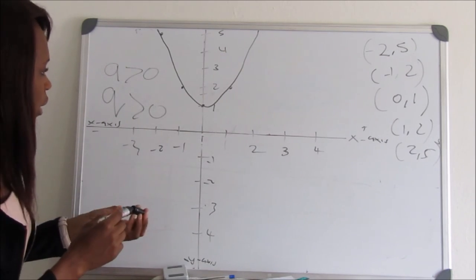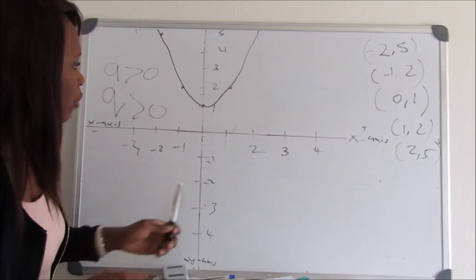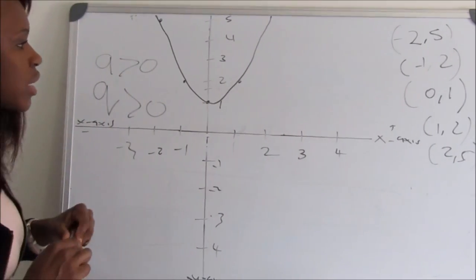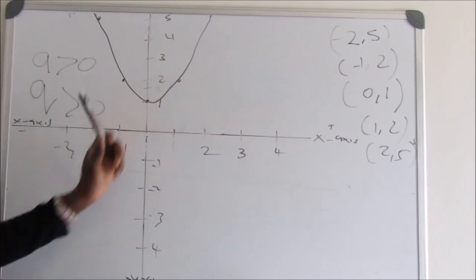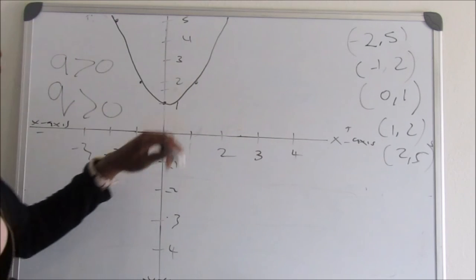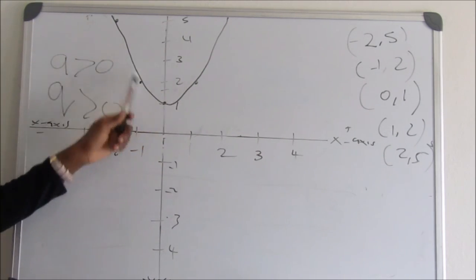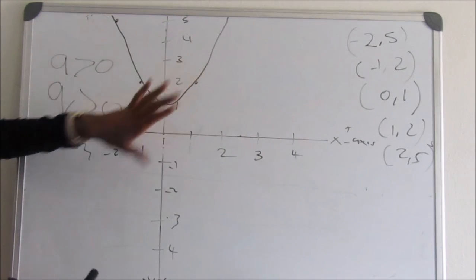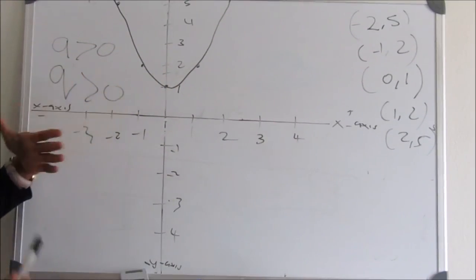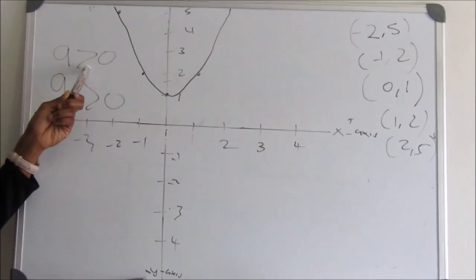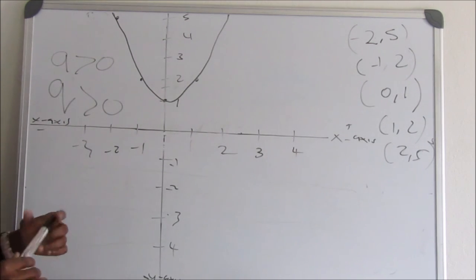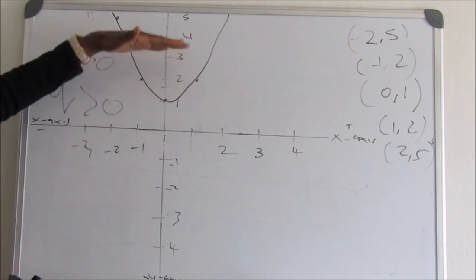I hope you understood this. Remember when you draw your graph, you must always name your axes and show which side is positive and which side is negative. This rough sketch confirms that a is greater than zero because our graph has a smiley face, and q is greater than zero because the graph has been shifted upward.